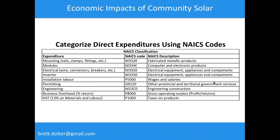The next step is to take all these types of expenditures and categorize them using North American Industrial Classification System codes — NAICS codes. We match the expenditures to the right NAICS category: mounting fits with the fabricated metallic products category; engineering fits with engineering construction. This is important because we use it to do the indirect economic impact calculations.